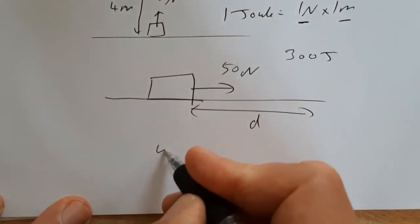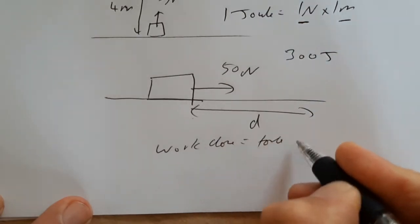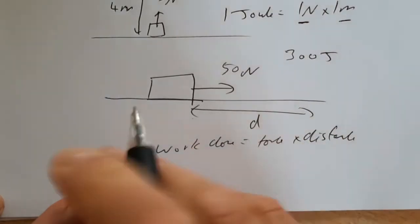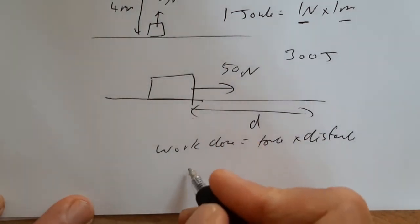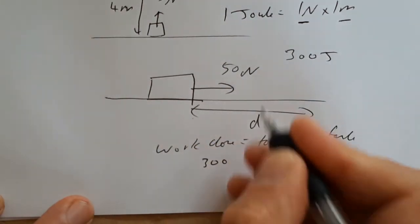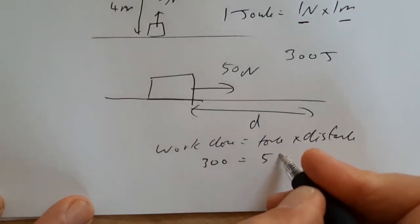So we go back to our equation. Work done equals force times distance. And there are different ways of approaching this. We could rearrange and then substitute. But on this instant, I think it's often easiest. We're going to substitute and then rearrange. So the total work we can do is 300 joules because we've got 300 joules of energy available. The force is 50 newtons.